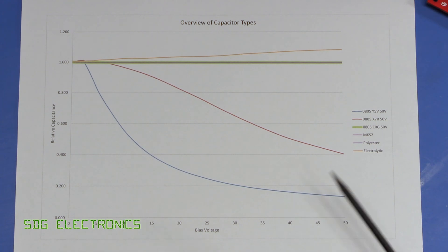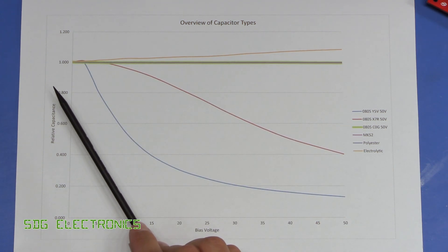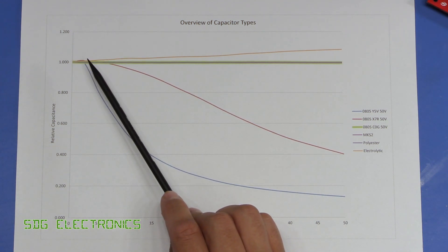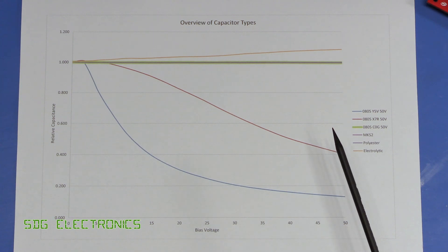And then just for completeness I also tested a few different technologies of capacitors. So I've kept on this graph one of the Y5V capacitors, that's this one with the steepest slope, then I've got the X7R.